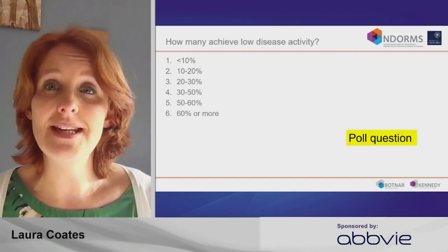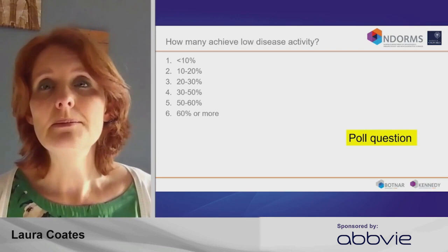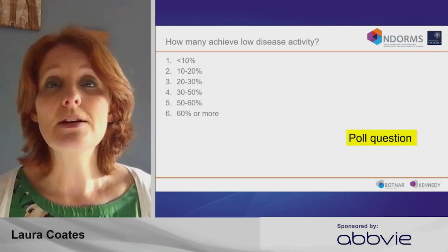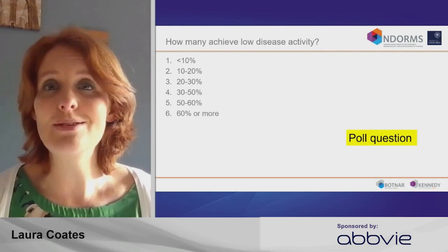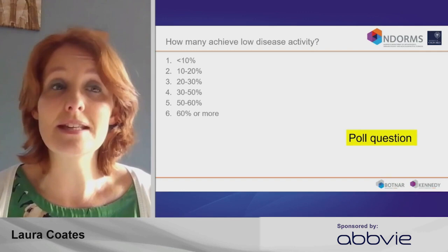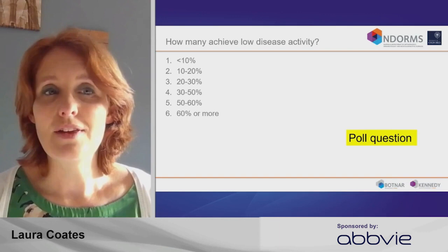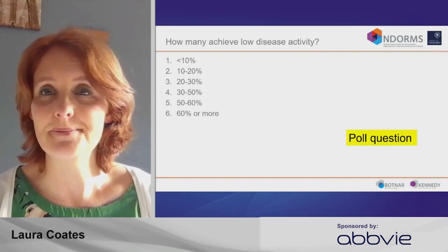And what about if we change that to low disease activity? Remission isn't always feasible, particularly in patients who have very severe or longstanding disease, but sometimes we look for low disease activity as well. If we're thinking now about how many achieve low disease activity and remission — so anybody in a reasonably good state — how many of your patients do you think that would be? The categories are the same: less than 10%, 10 to 20%, 20 to 30%, 30 to 50%, 50 to 60%, or 60% or more.